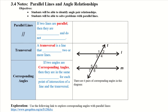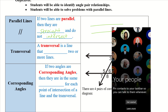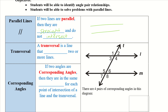If two lines are parallel, then they are straight and do not intersect. So parallel lines, they are straight, and they will never cross one another.